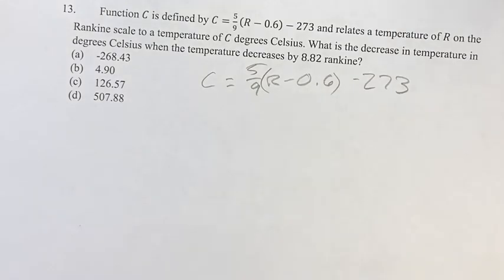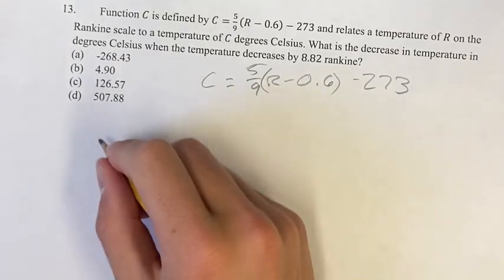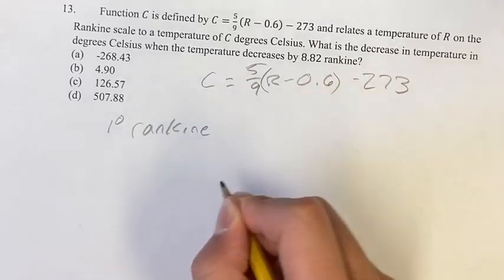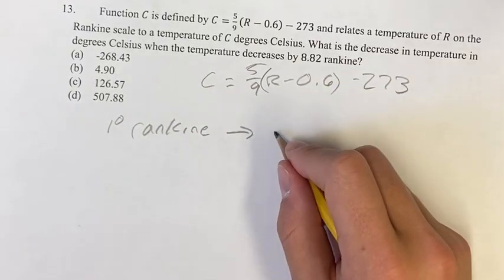Or you could say, what is the rate of change for Celsius over Rankine? So if you change 1 degree Rankine, what does that turn into in terms of Celsius?